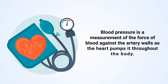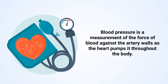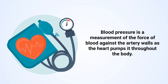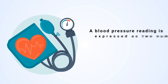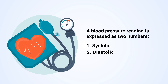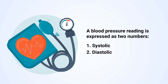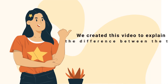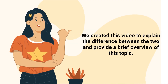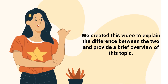Blood pressure is a measurement of the force of blood against the artery walls as the heart pumps it throughout the body. A blood pressure reading is expressed as two numbers: systolic and diastolic. We created this video to explain the difference between the two and provide a brief overview of this topic.